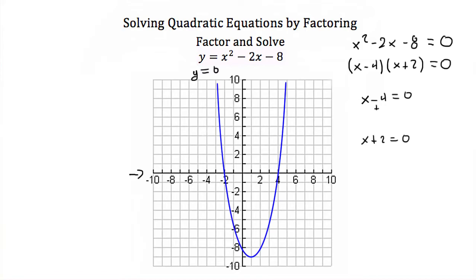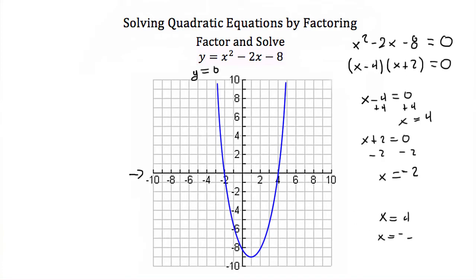If I do that, for this first equation I'll add 4 to both sides and I'll get x is equal to 4. For the second equation, if I subtract 2 from both sides, I get x is equal to negative 2. So my solutions then are x is equal to 4 and x is equal to negative 2.